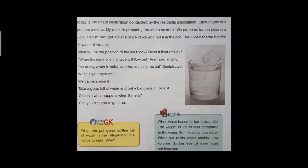Today is the Onam celebration conducted by the Residence Association. My uncle is preparing the welcome drink — we prepared lemon juice in a big pot. Danish brought a piece of ice block and put it in the pot. The juice became brimful. What is the position of the ice block? Does it float or sink? You have already observed many times — you drink juices with ice cubes. It floats, so you can tick that answer.